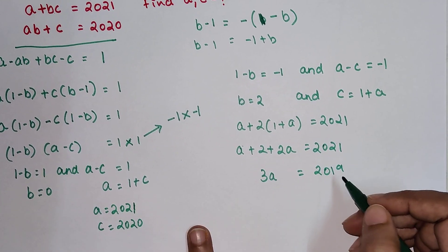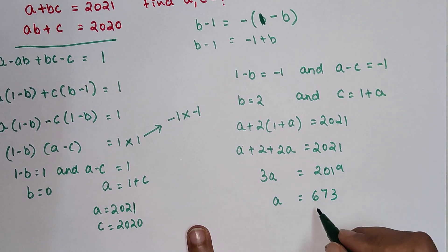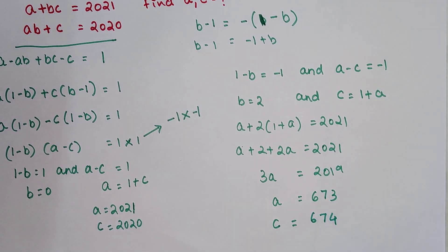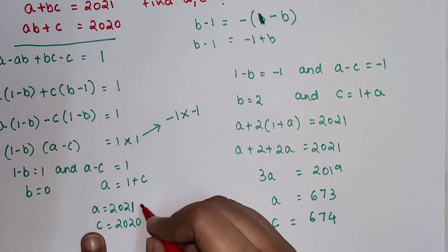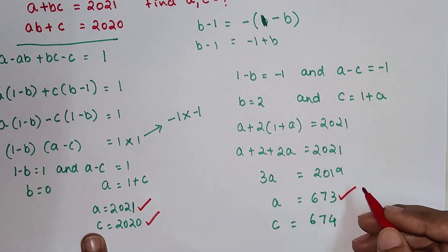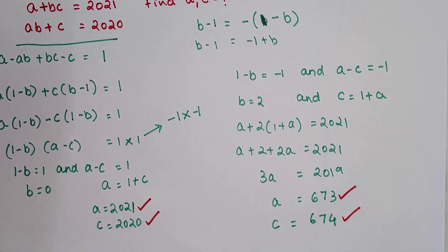So I have 3A equals 2019 because this 2 is taken on the other side it gets subtracted. So now I have A value as nothing but 673 and if 673 is my A value then C value over here will be 674. So in that case I can say that the value of A can be 2021 or 673 and value of C can be 2020 or 674.